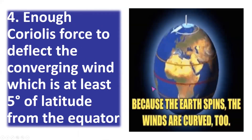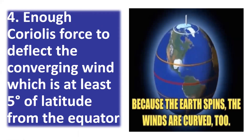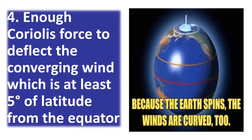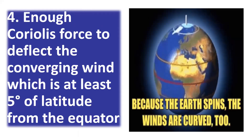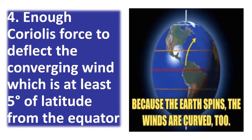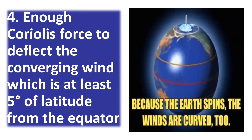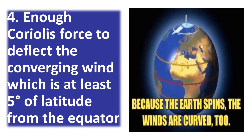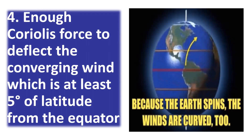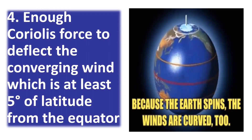Condition 4: there is enough Coriolis force to deflect the converging winds, at least 5 degrees latitude from the equator. The Coriolis effect is caused by the rotation of the Earth and is essential for cyclone rotation. In the Northern Hemisphere, cyclones spin counterclockwise, while in the Southern Hemisphere they spin clockwise.